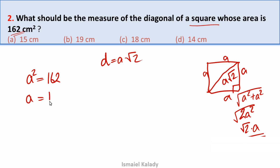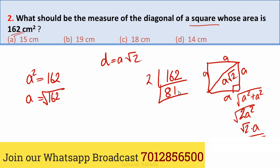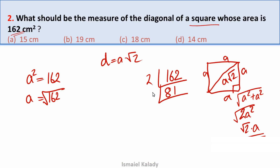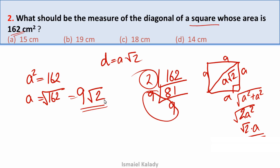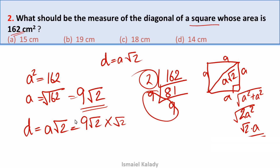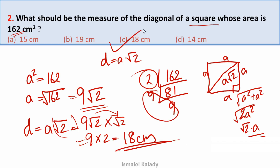In the case of area a², we want to take a root. We consider 162 and factorise it — just factorise and simplify. We simplify to get root 162, and we get pairs of factors. The result is 9 into 2, giving us 18 centimeters. That is the right answer, option C.